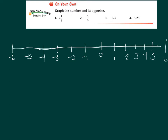For number one we have two and a half, so we need to go to two and then right between two and three. Positive two and a half goes in orange, and negative two and a half would be right about here. For the next one in red, negative four-fifths would be almost all the way to negative one, and positive four-fifths would be almost all the way to positive one.